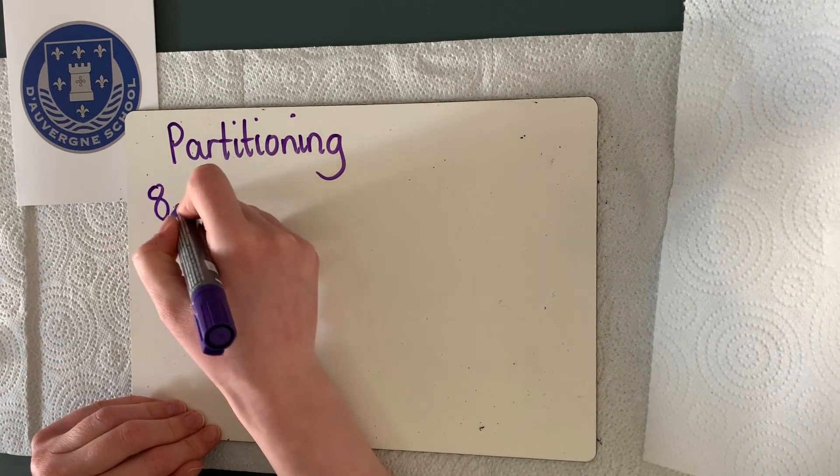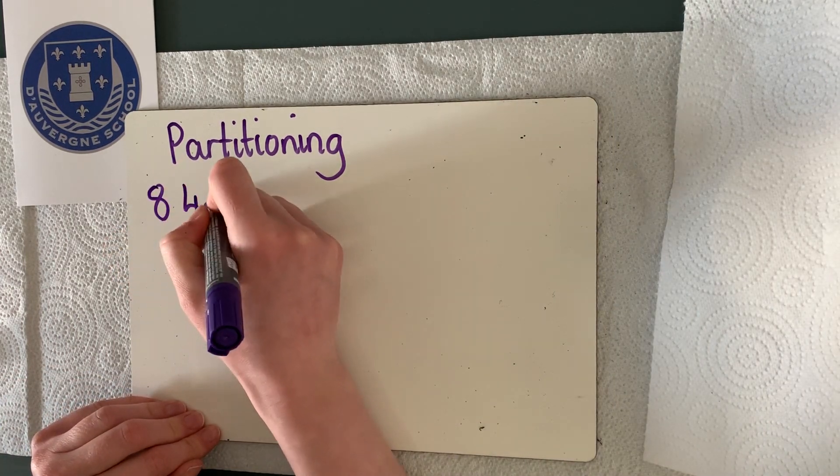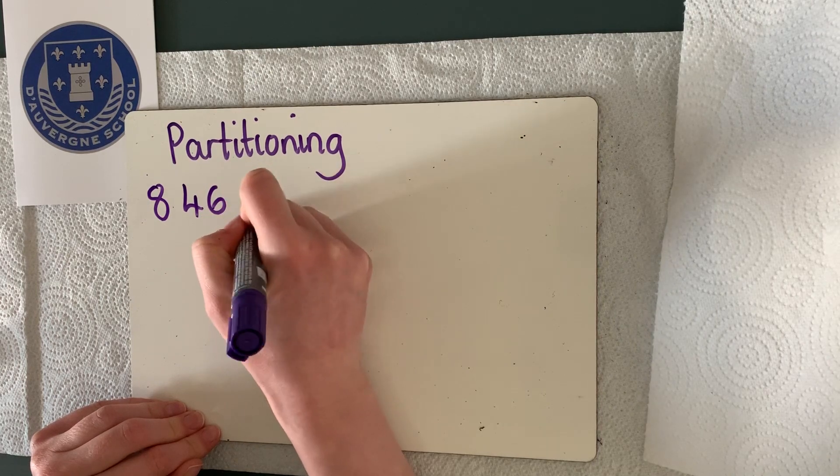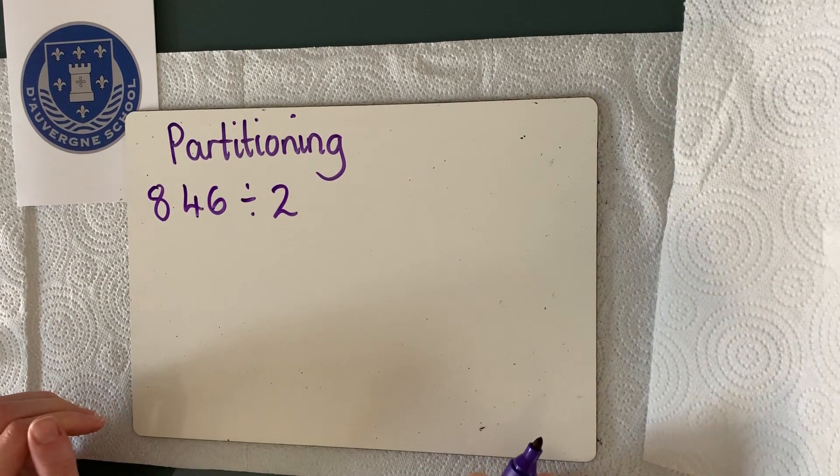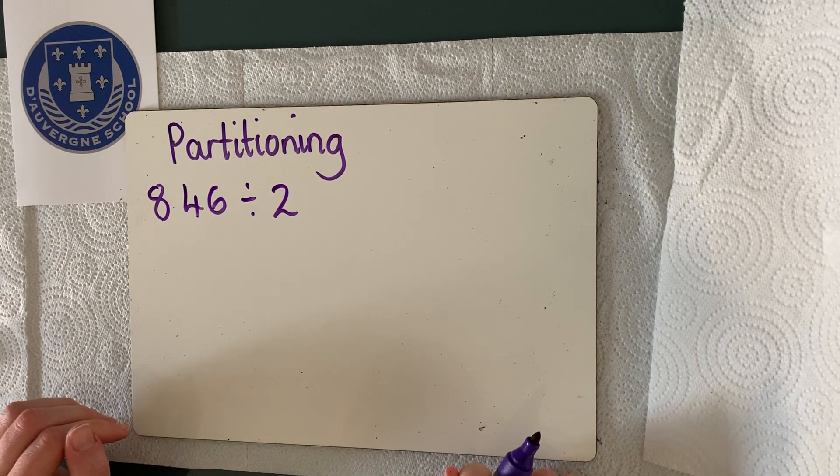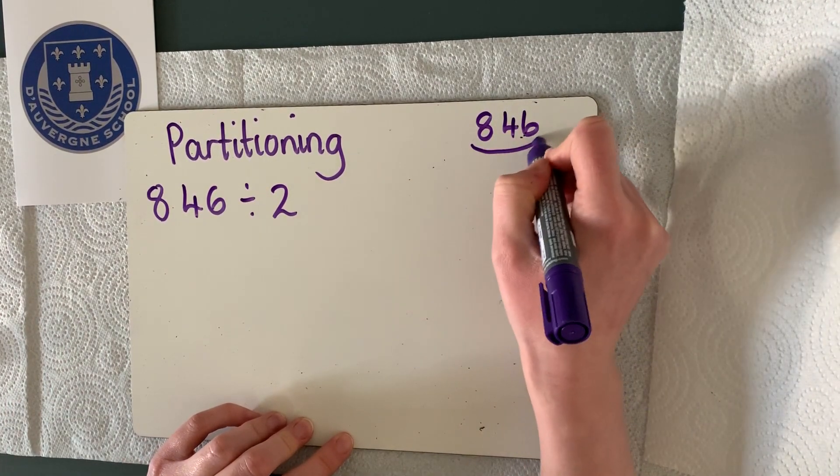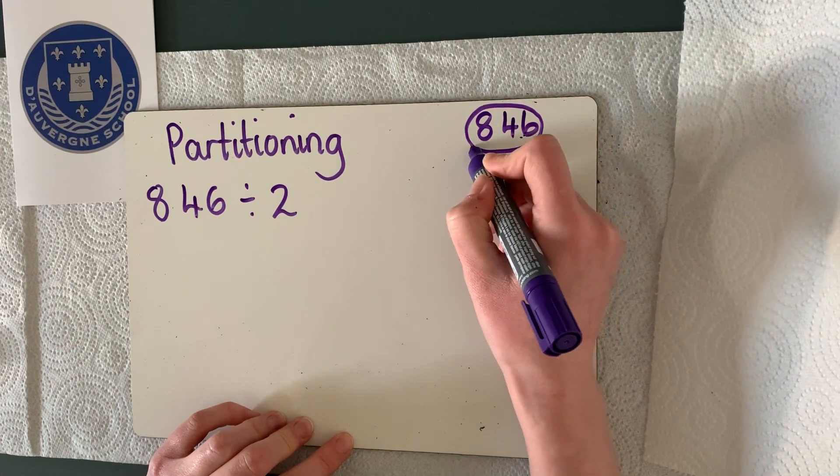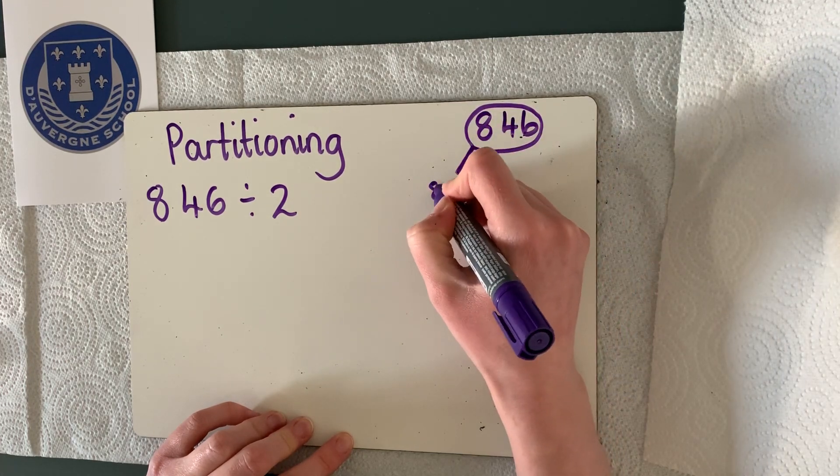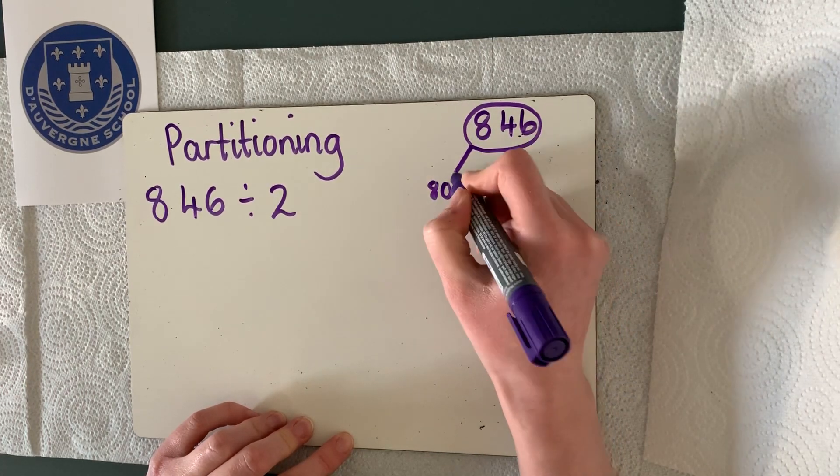So let's complete 846 divided by 2. Okay, so if we are partitioning 846, we are breaking that up into the hundreds. We've got 8 hundreds.